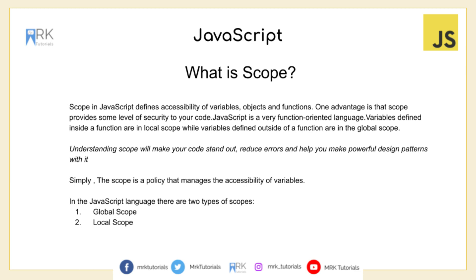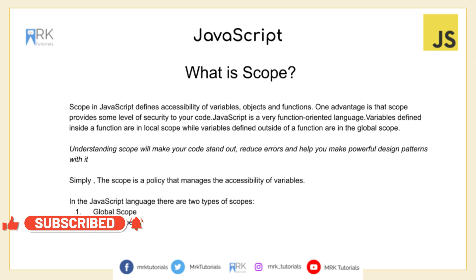We are now at an important concept of JavaScript — the most essential concept for every developer — that is scope. I personally think understanding the concept of scope improves the speed, efficiency, and usability of the code. So what is scope? Scope is like a policy that says this part of code can use only these variables. Scope in JavaScript defines the accessibility of variables, objects, and functions. One advantage is that scope provides some level of security to your code. JavaScript is a function-oriented language. Variables defined inside a function are in the local scope, while variables defined outside the function are in the global scope.